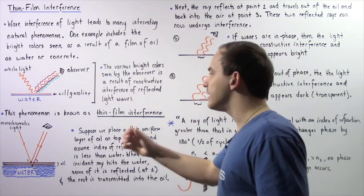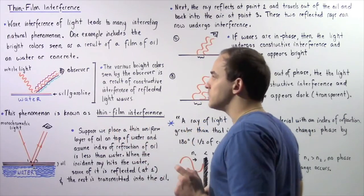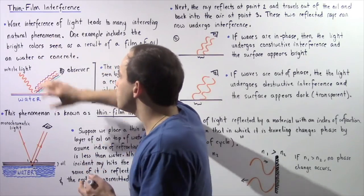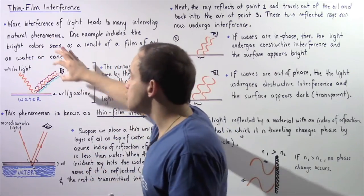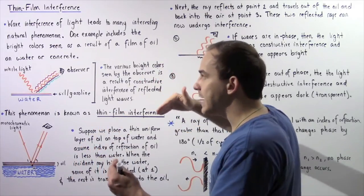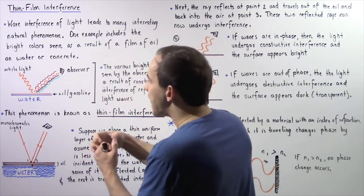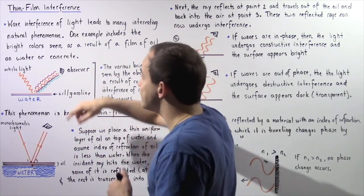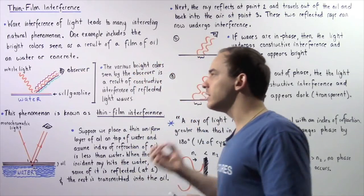This phenomenon is known as thin film interference. Basically, if constructive interference of these waves takes place — if two or more waves are completely in phase with respect to one another — their amplitudes will increase and the brightness seen by the observer will increase.